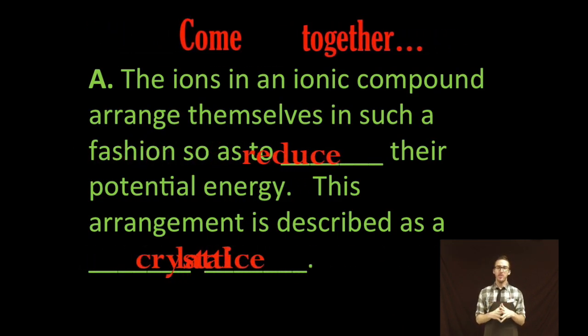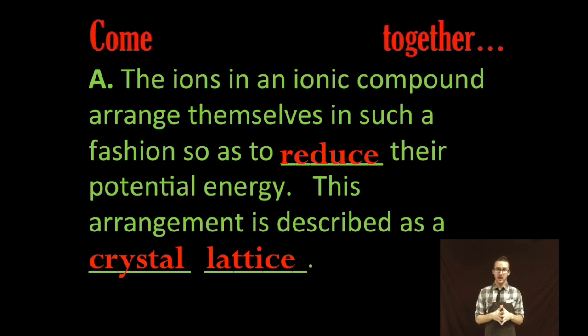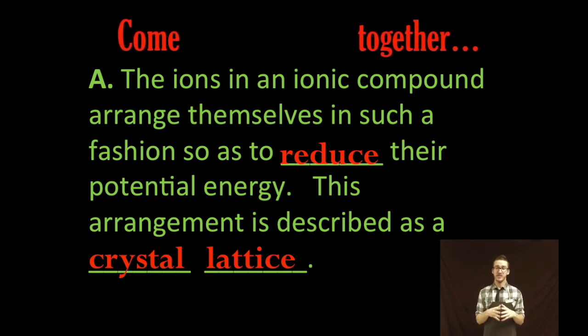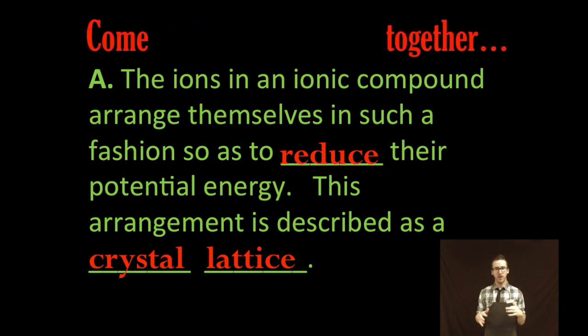Now an important note about ions as they come together to form ionic compounds. They're gonna arrange themselves in such a fashion to reduce their overall potential energy. And this arrangement for ionic compounds is described as a crystal lattice.